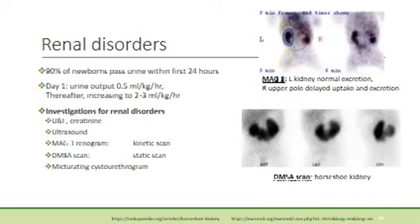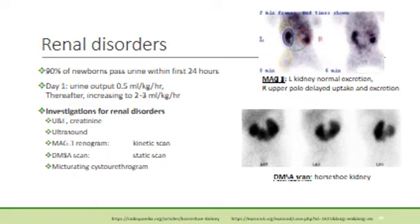The first permanent nephrons appear at around eight weeks gestational age, and nephrogenesis is complete by 36 weeks gestation. The fetal kidney greatly contributes to the volume of amniotic fluid, so the kidneys are basically functional, although the placenta is still removing waste products. When the baby is born, there is a sudden increase in the glomerular filtration rate, and 90% of newborns will pass urine within the first 24 hours. On day one, urine output is around 0.5 mL per kg per hour, thereafter increasing to 2 to 3 mL per kg per hour.